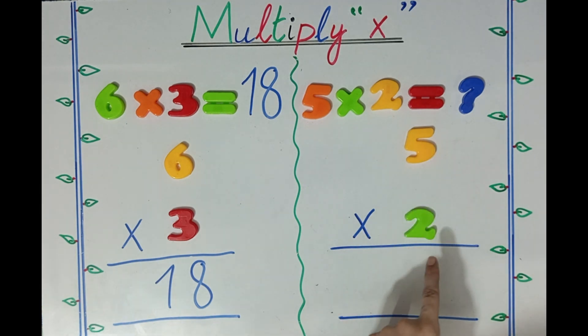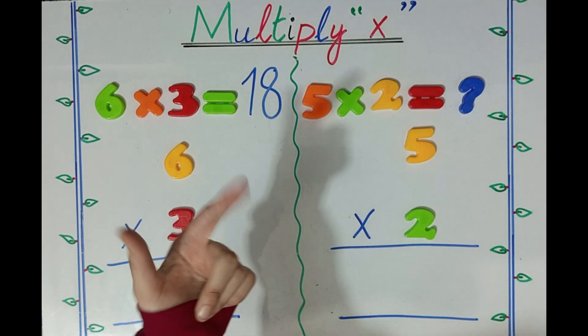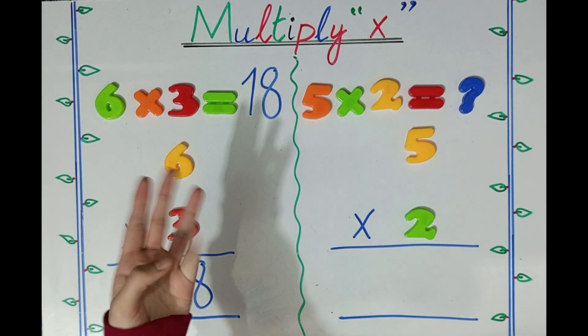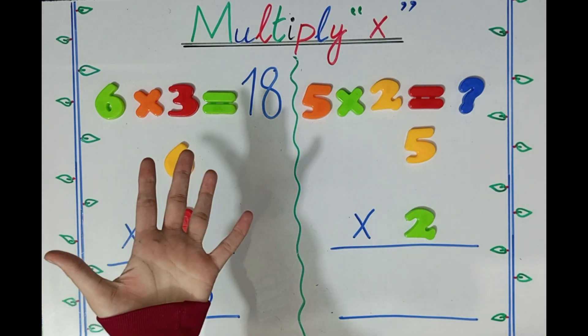5 multiplied by 2. We will learn: 1 two is 2, 2 twos are 4, 3 twos are 6, 4 twos are 8, 5 twos are 10.